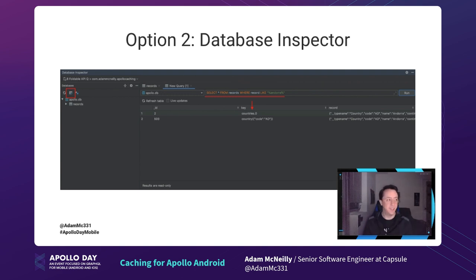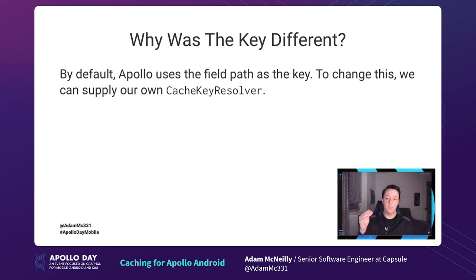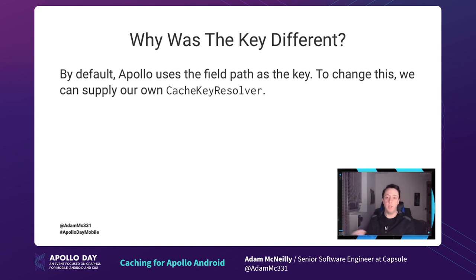So why was the key different? By default, Apollo uses the field path as the key — that's why we saw countries.number, because the initial query was called countries and the number was the index of the country in the response. That was different for the detail query, because the query name is country and we pass a country code as an argument. If we want to set the key ourselves to leverage the normalized cache better, we need to supply our own cache key resolver.